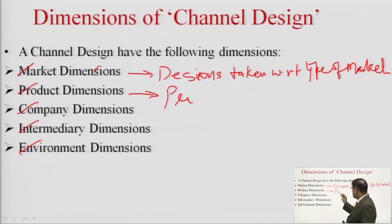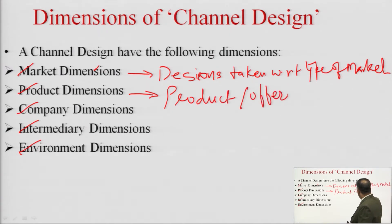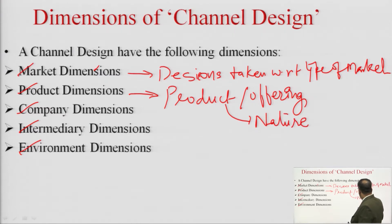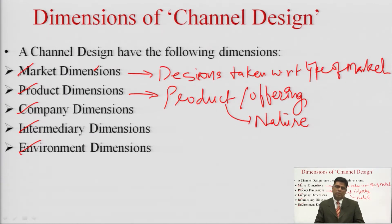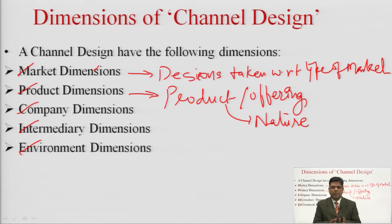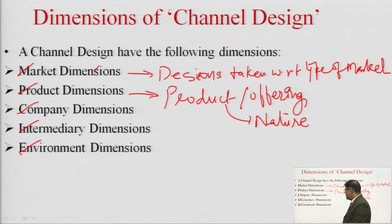Product dimensions are related to the product or offering of the company which it is taking towards the consumer. This includes the nature of the product — whether it is a durable product or a perishable product, whether it is FMCG, consumer durable, electronic gadget, or an edible. These are the product dimensions covering all aspects of the offering being taken to market.